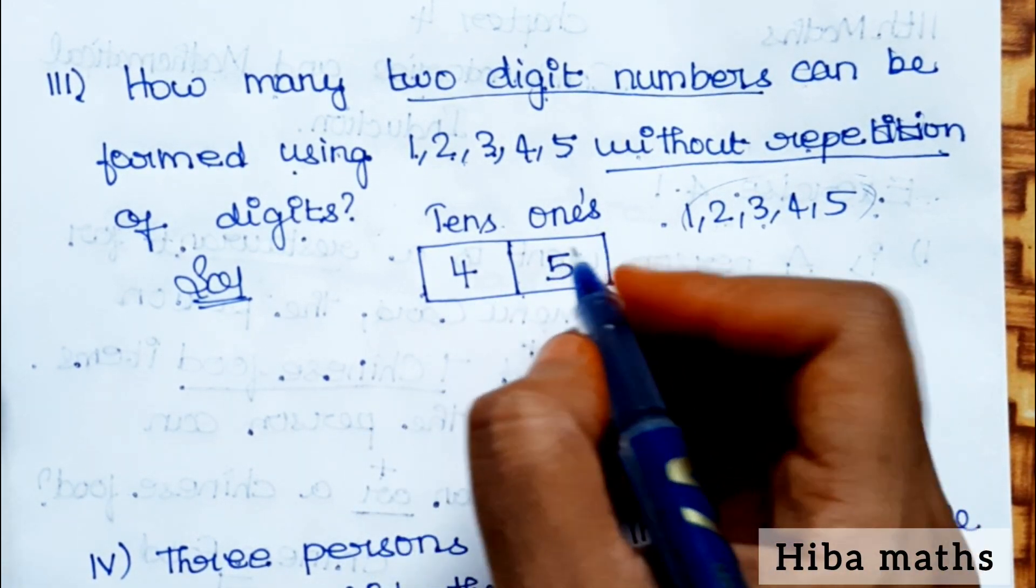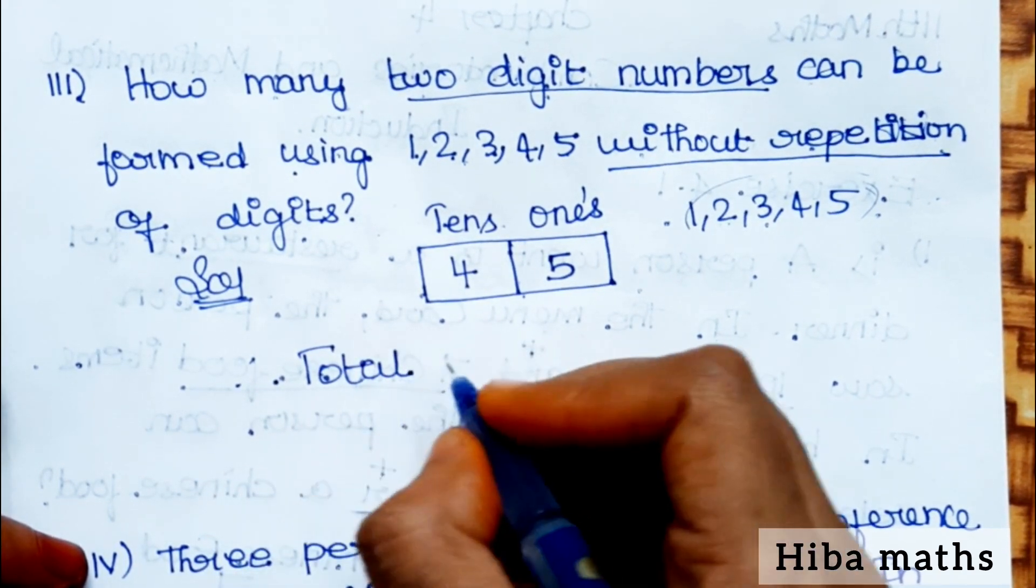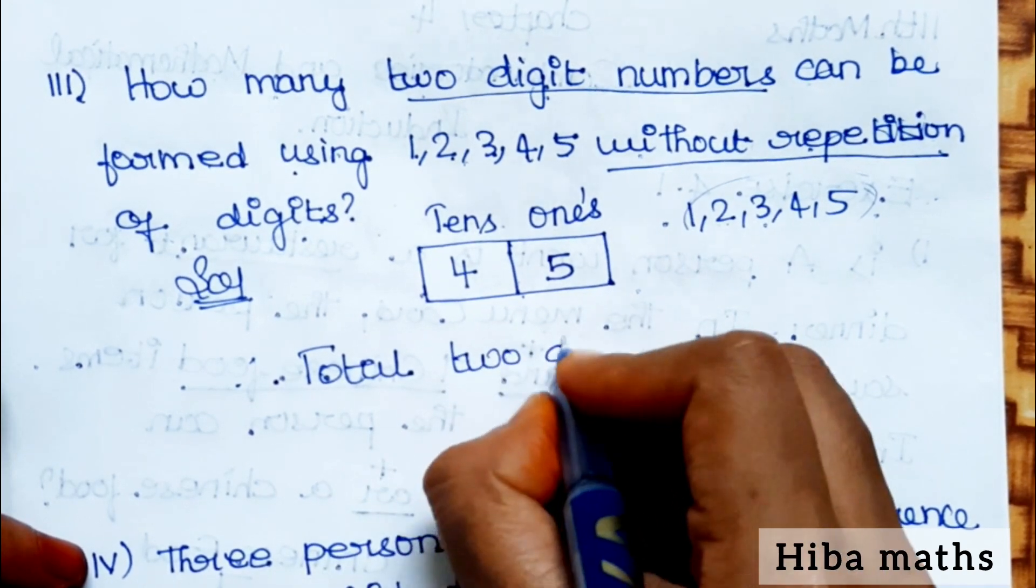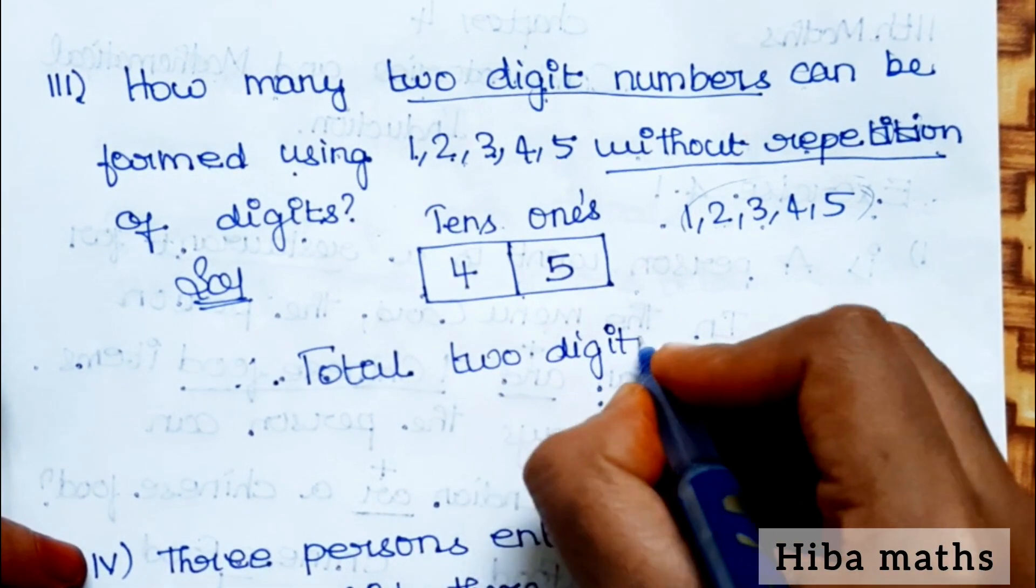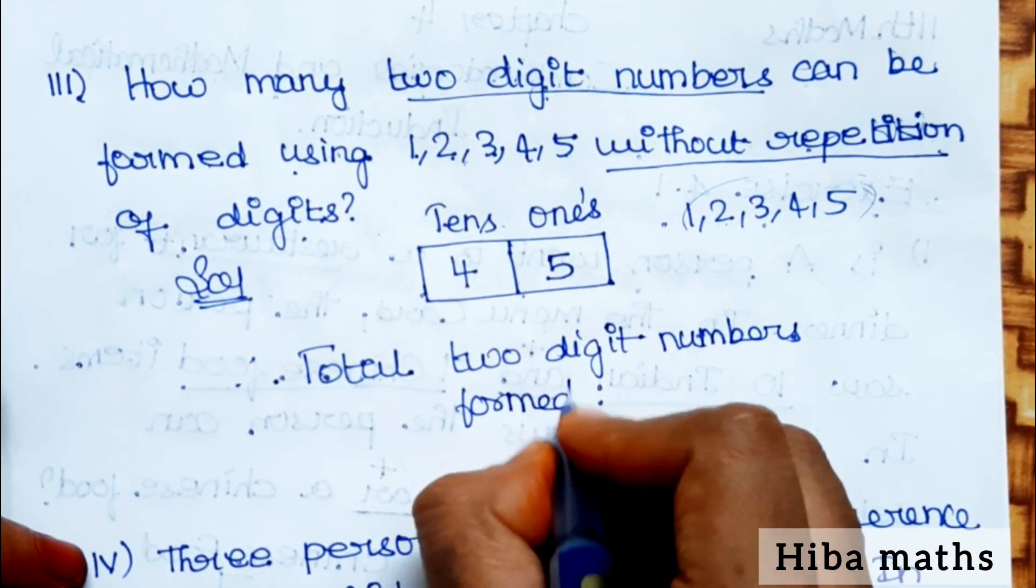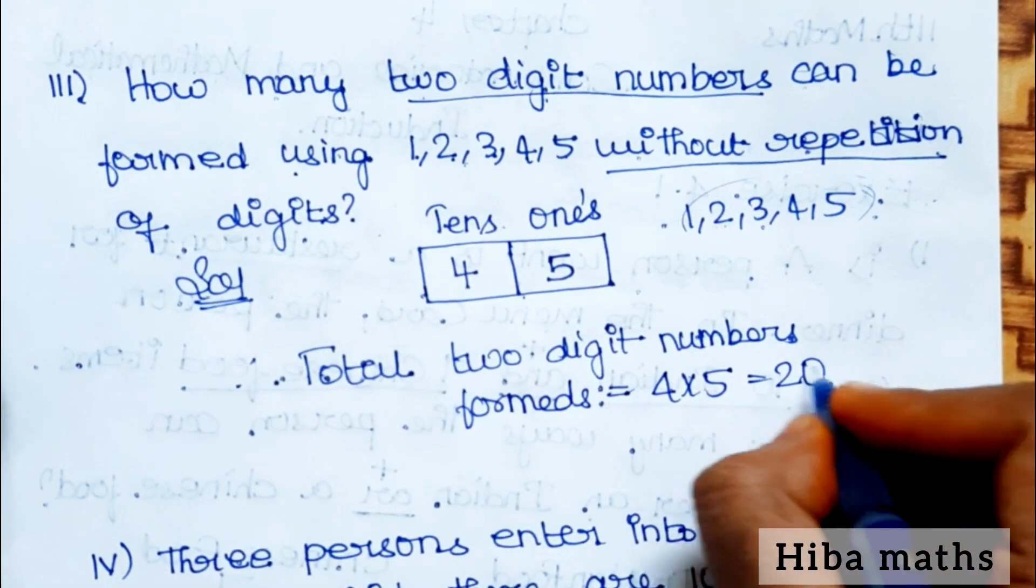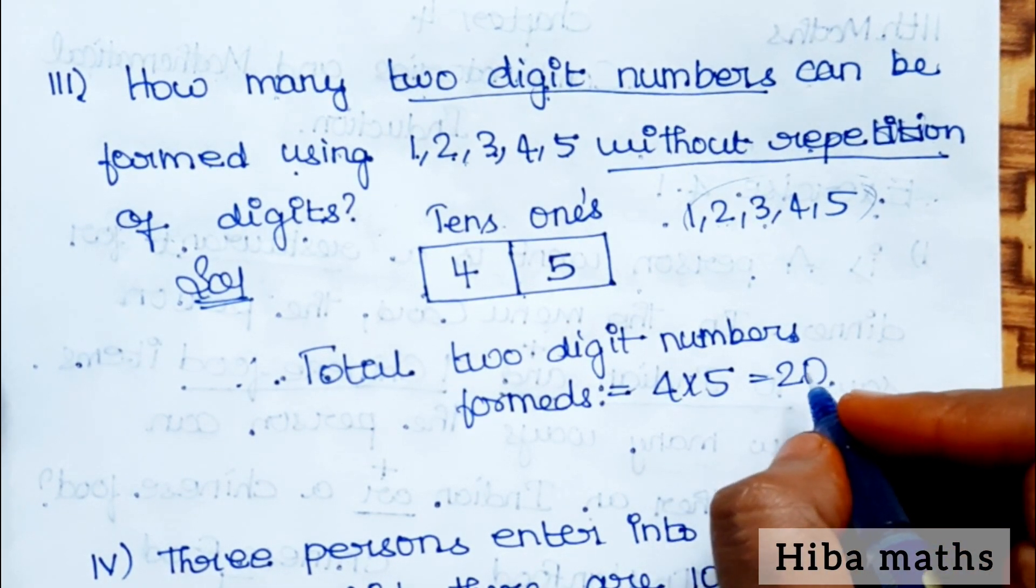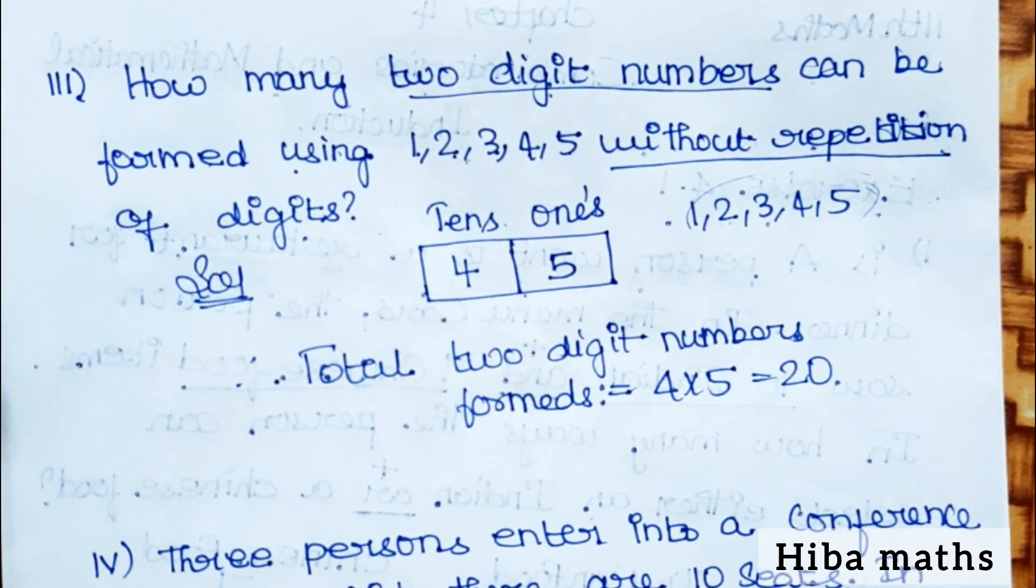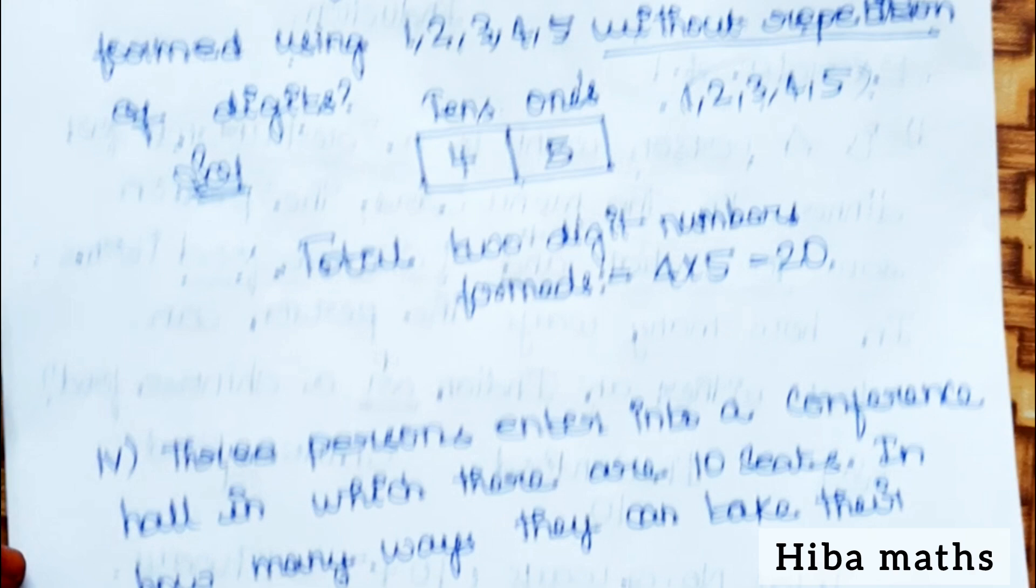We have numbers 1, 2, 3, 4, 5. Total 5 numbers can be used in the ones digit. For the tens digit, 4 numbers remain. Therefore, total two digit numbers formed equals 5 into 4, that is equal to 20. Total 20 numbers can be formed.